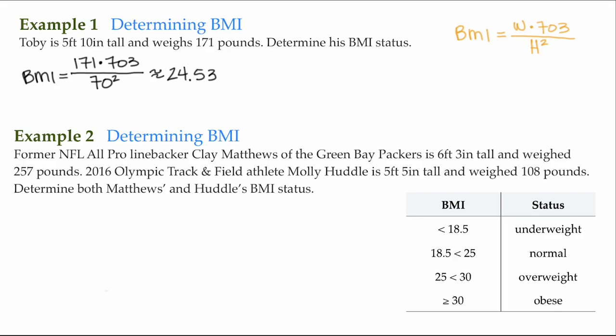We'll do the same thing. The BMI for Matthews is his weight, 257 pounds, times 703 from the formula, divided by his height. He is 6 feet 3 inches tall. 12 inches to a foot, so 6 times 12 is 72, plus 3 more inches. His BMI comes out to approximately 32.12.